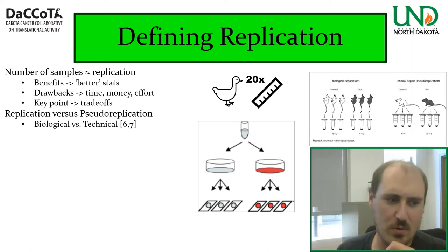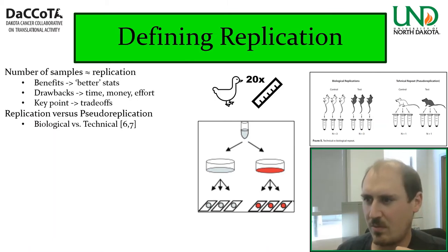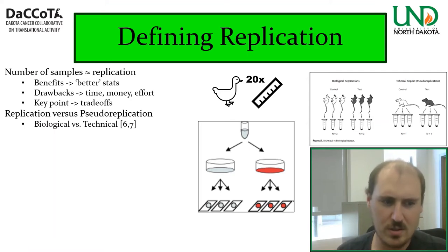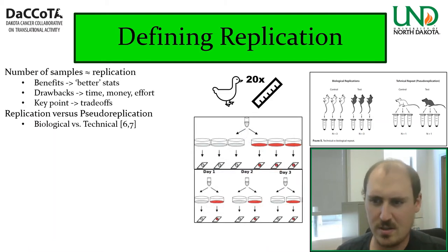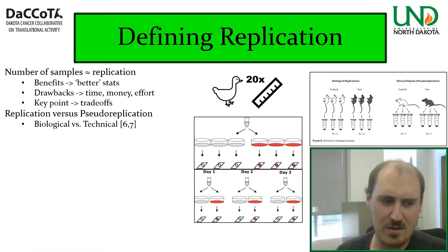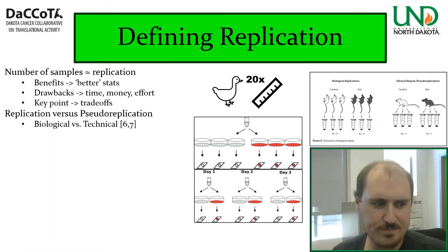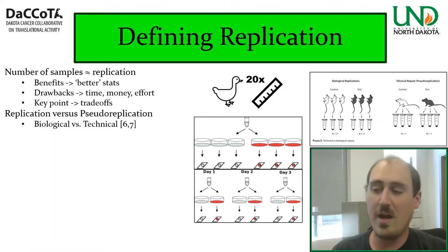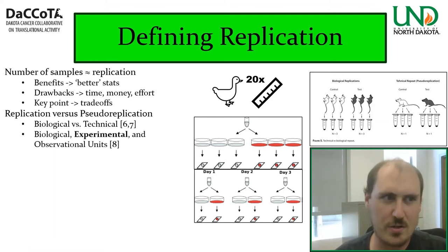In a mouse example, technical replication is essentially synonymous with pseudo-replication. However, technical and biological replication are not always the best explanations. Consider two upgraded cell designs: three control plates and three treatment plates all made at once, versus the same plates spaced across days. Both designs are better than the original, but the number of biological samples has not increased. Therefore, I suggest using the definitions of biological, experimental, and observational units.